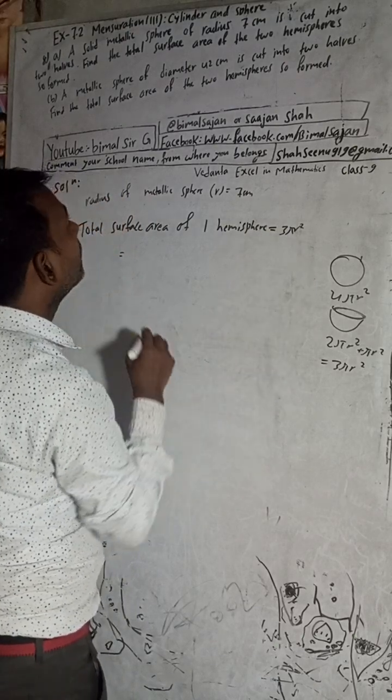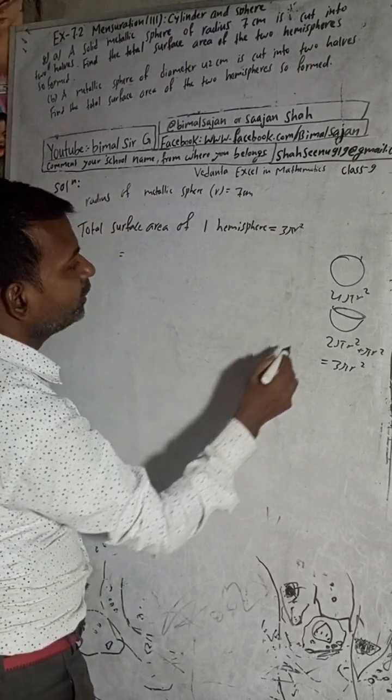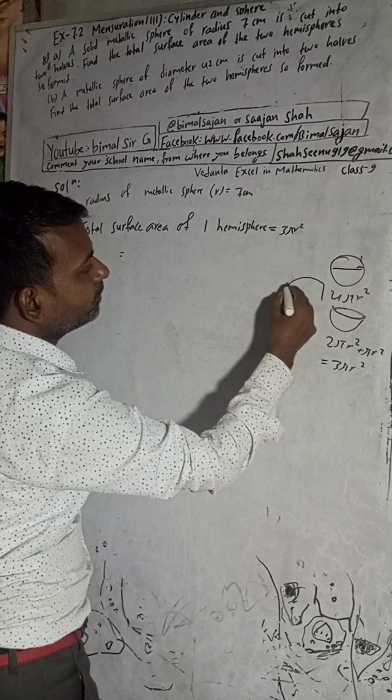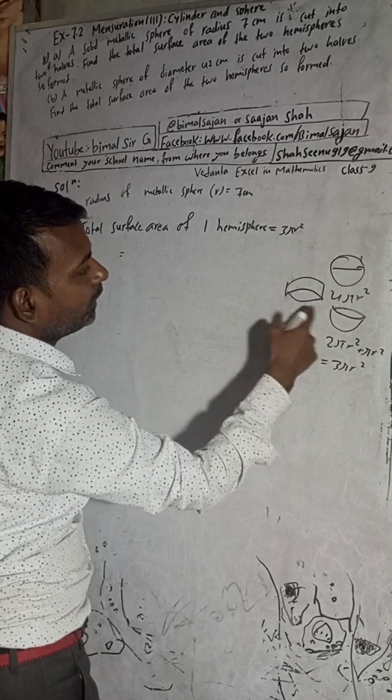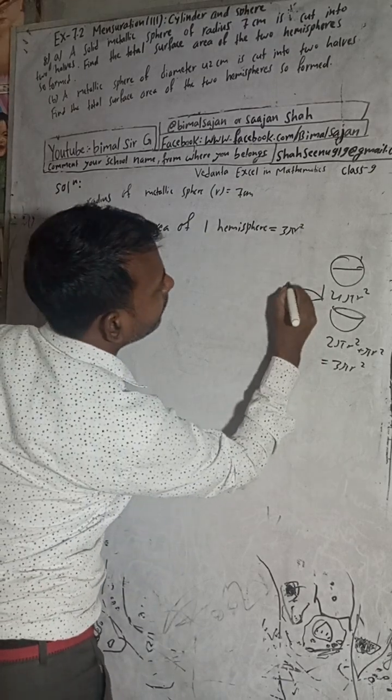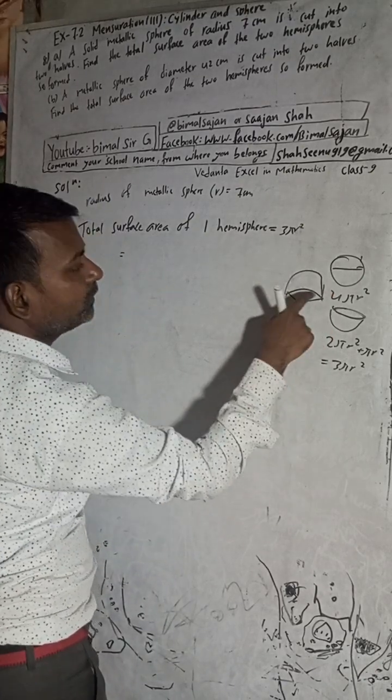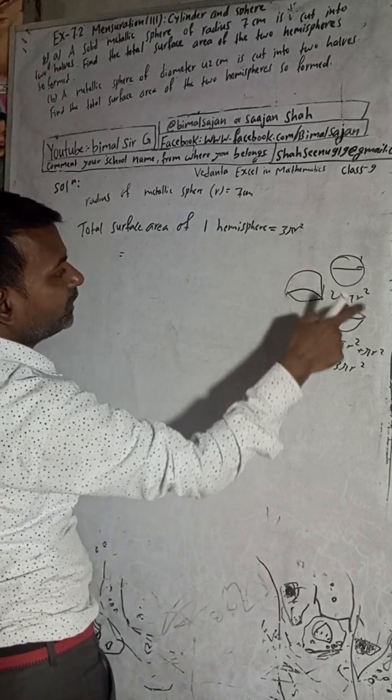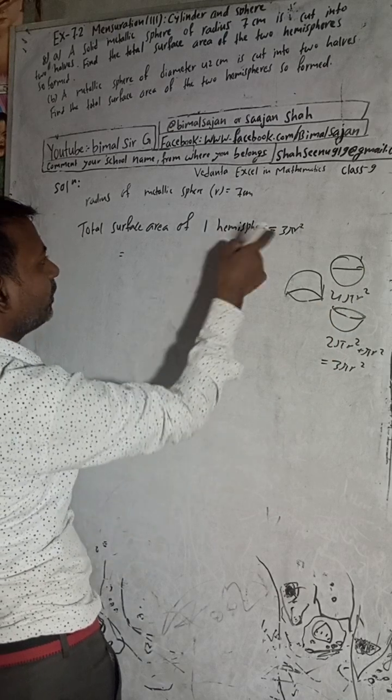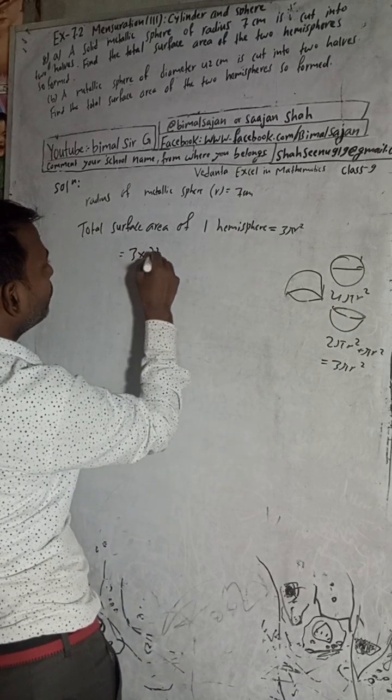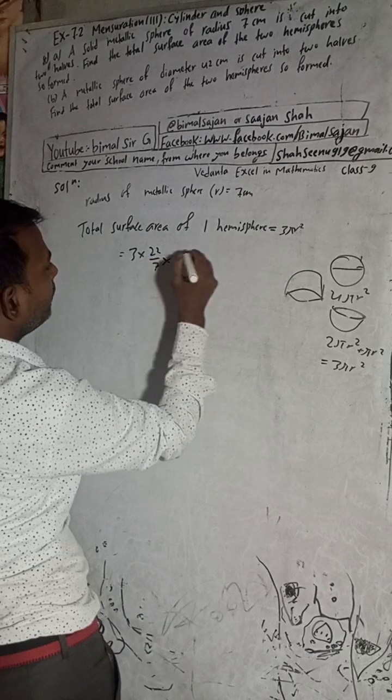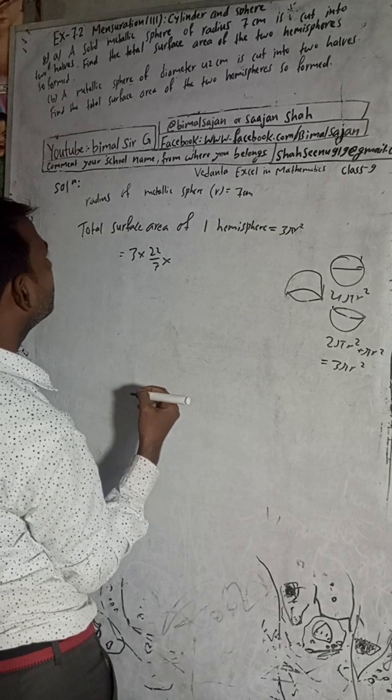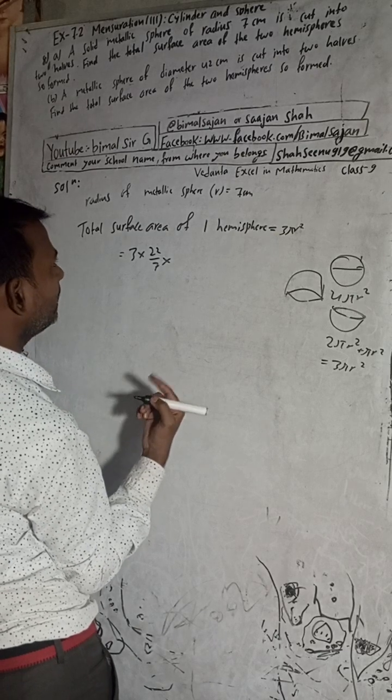The question tells there is a solid sphere cut into two halves. So one will be this type of hemisphere and the other will be this type of hemisphere. This total surface area is 3πr² and this is 3πr². So I will first get one. This is 3 × π, means 22/7, × r². Radius of metallic sphere and radius of hemisphere is same.